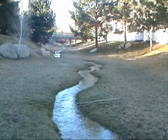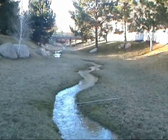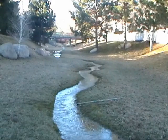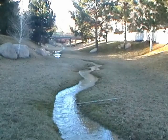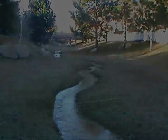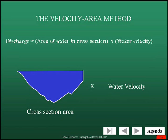One critical aspect of understanding riverine systems is knowing the stream discharge. Stream discharge is the rate at which a volume of water passes through a cross-sectional area. In this lab, we are going to practice measuring stream discharge using the velocity-area method, which works by finding the area of a given cross-section of the stream and multiplying it by the velocity of water passing through that section.